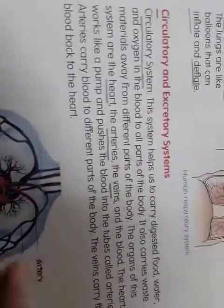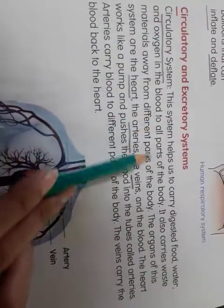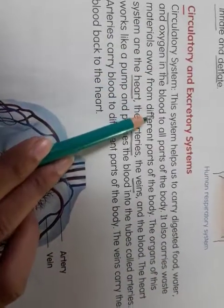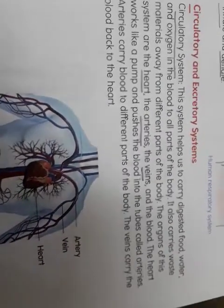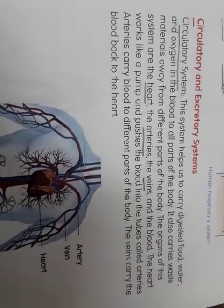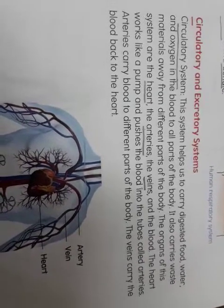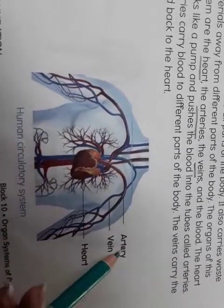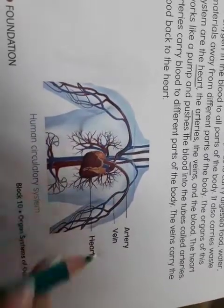Next lesson is the circulatory and excretory system. The circulatory system helps carry digested food, water, and oxygen in the blood to all parts of the body. The organs of the circulatory system are: arteries, veins, and the heart.